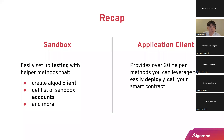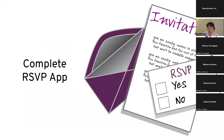Recap: the sandbox module easily lets you set up a testing environment and provides helper methods to create the algod client and get a list of sandbox accounts. The Application Client provides over 20 helper methods to easily interact with and deploy your smart contract. That covers everything about Beaker — now let's look at a complete RSVP application that uses everything we learned.